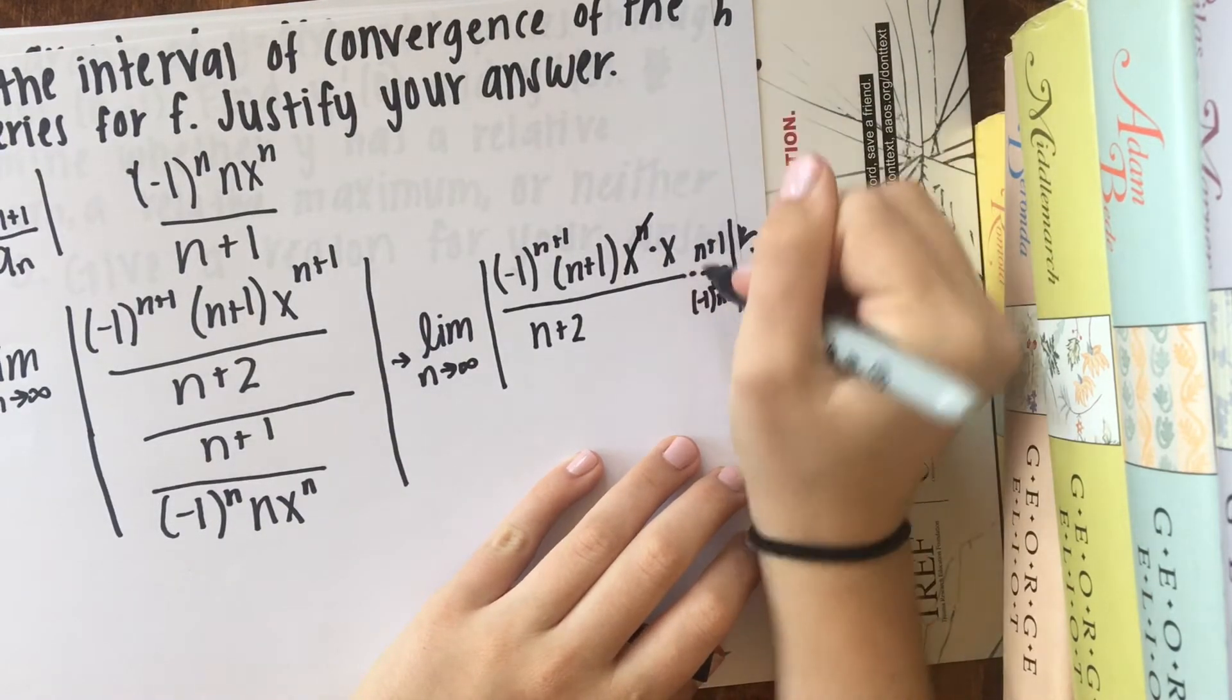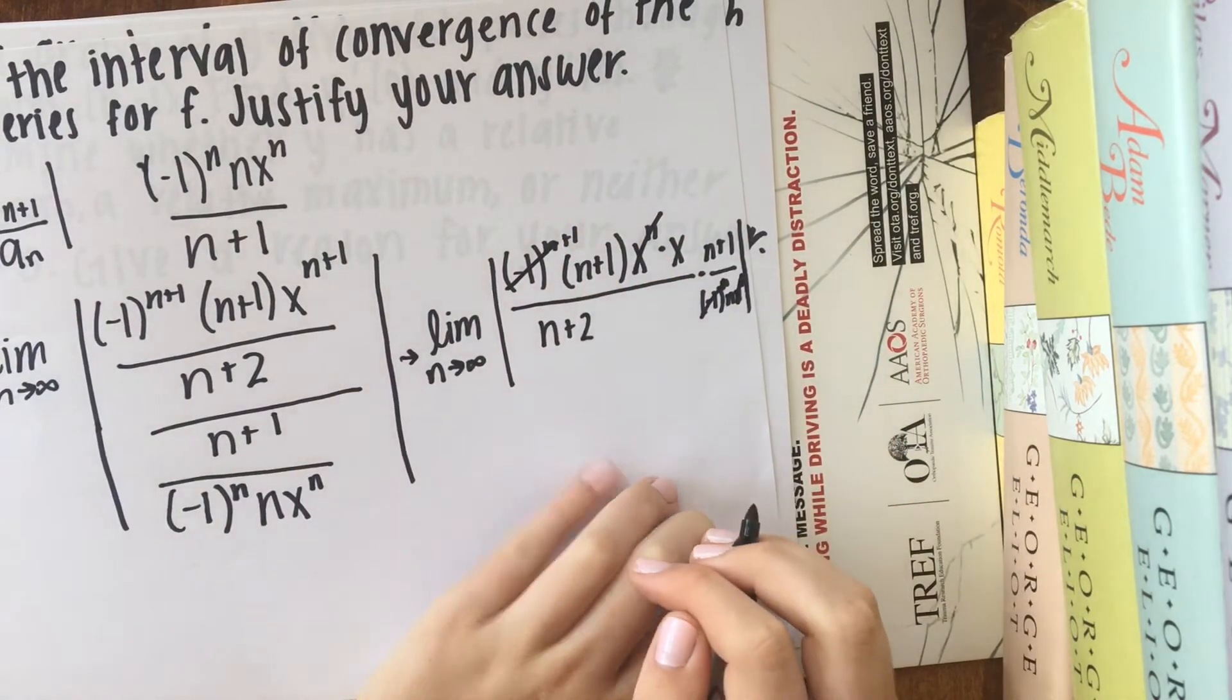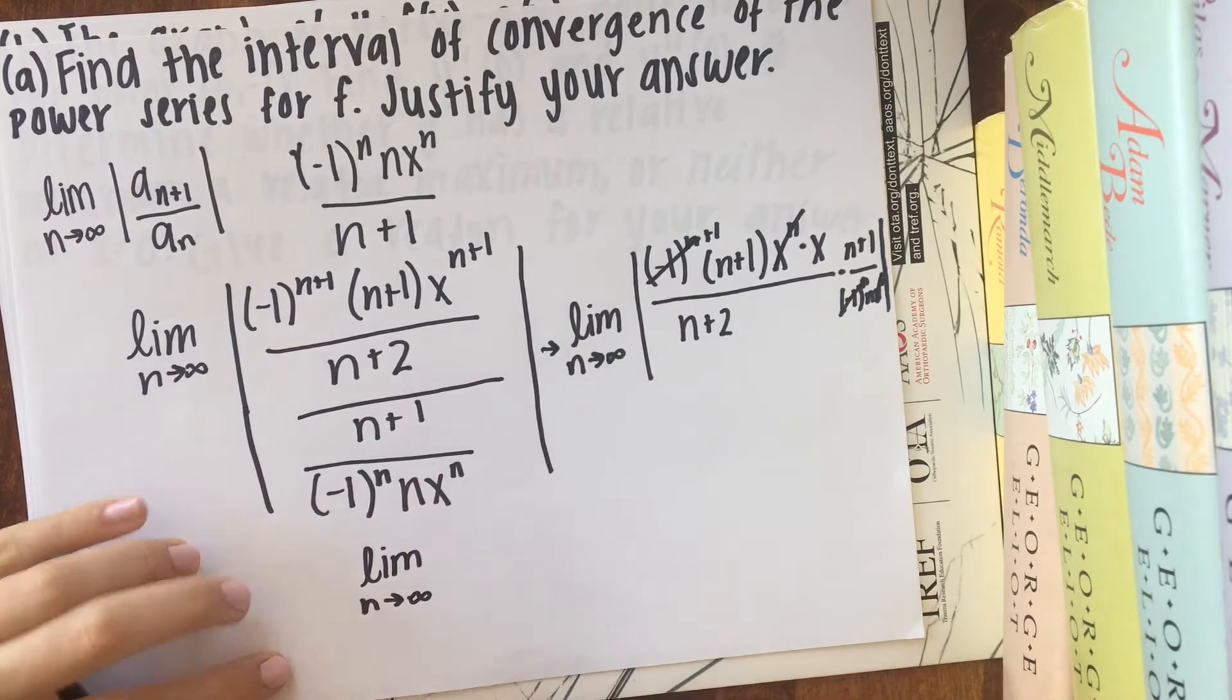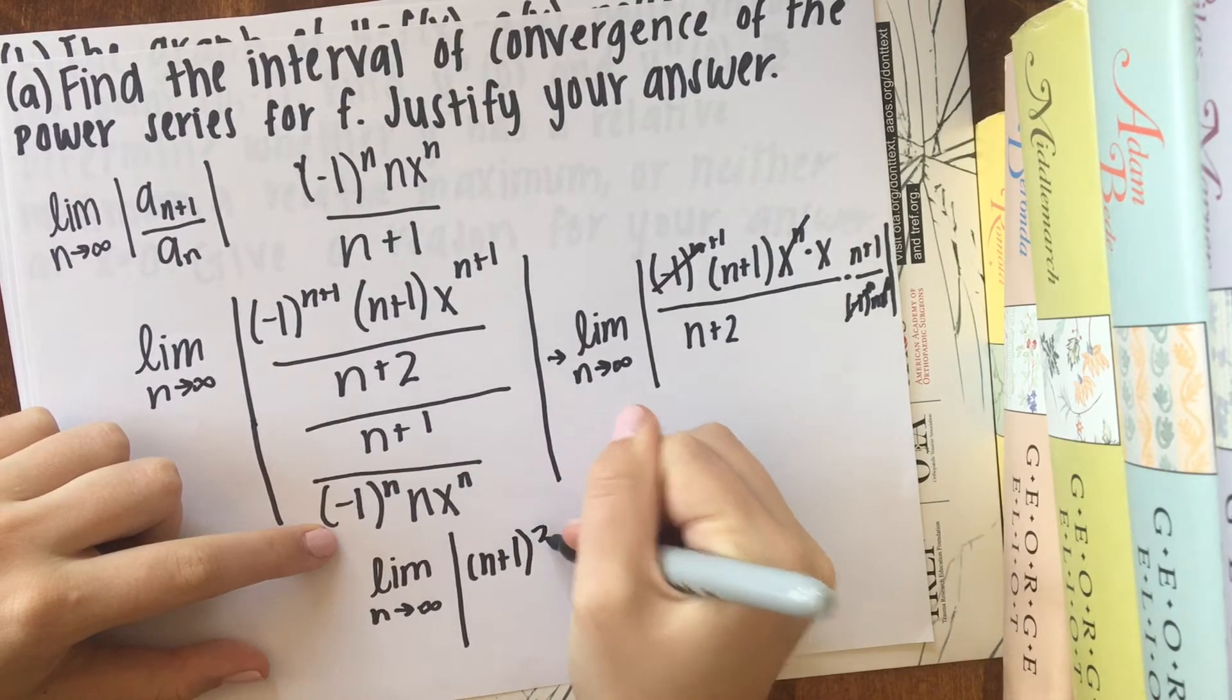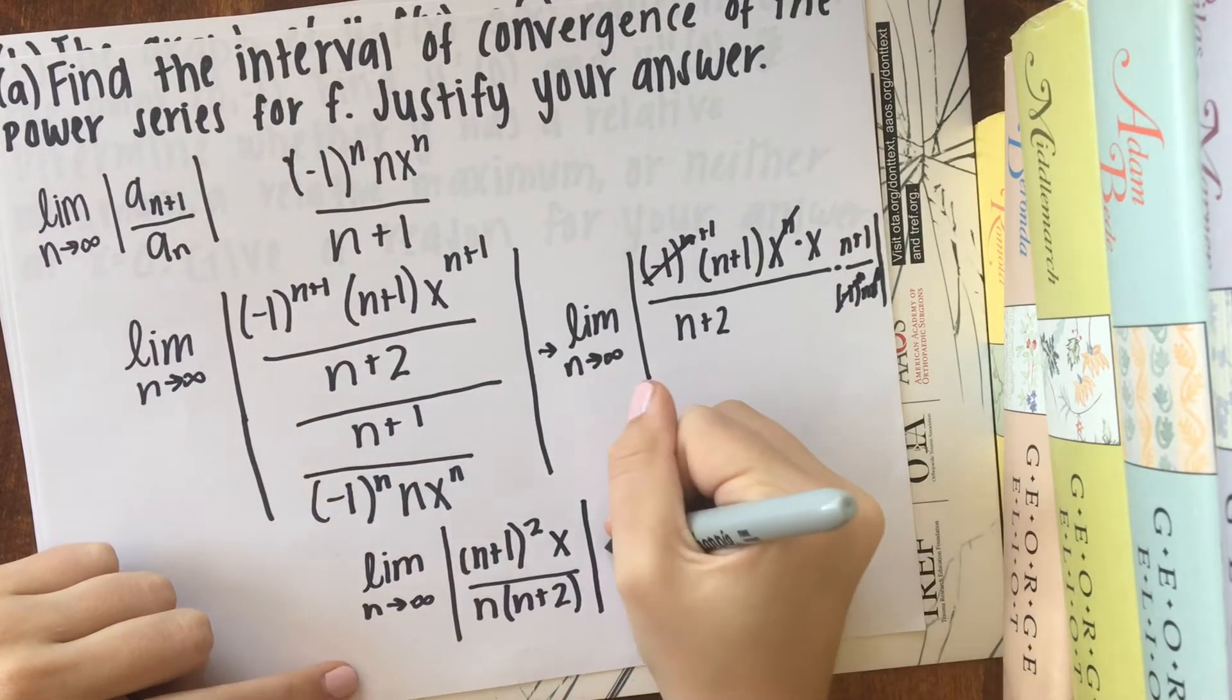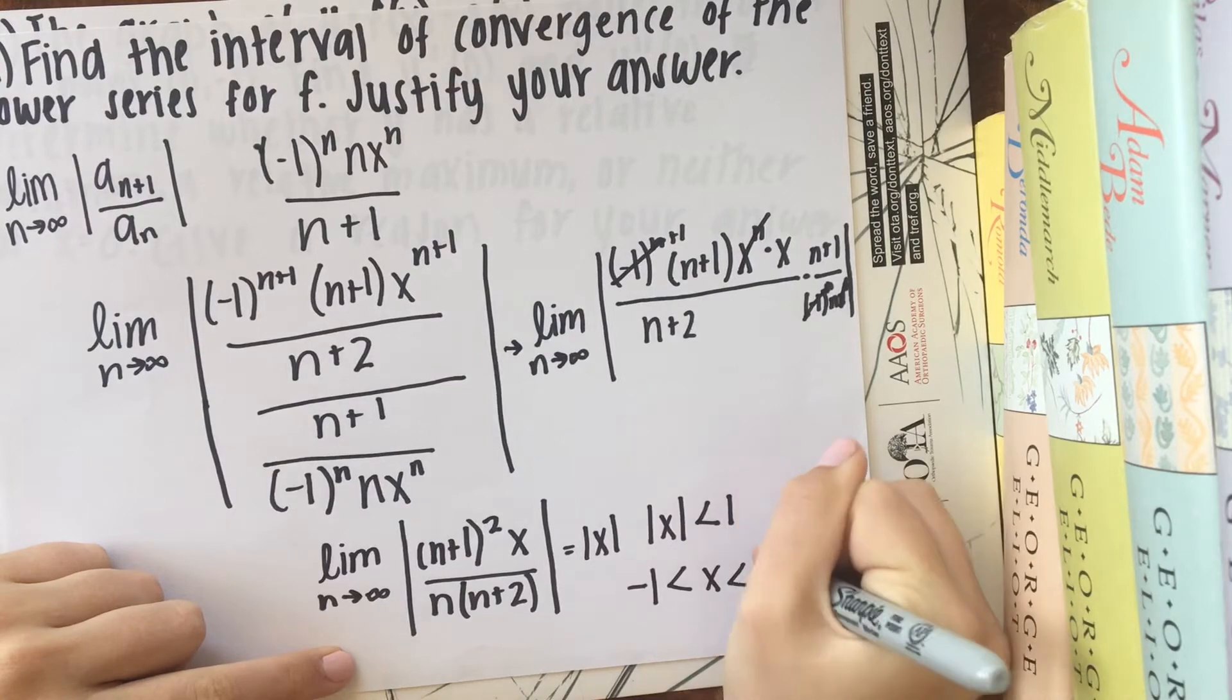And here we have some cancellations. So these two x to the n's are going to go, and these negative ones are going to go, and this one negative one doesn't matter because it's in that absolute value. So now what we have is the limit as n goes to infinity of n plus 1 squared x over n, n plus 2. And so since the limit as n goes to infinity here is going to equal absolute value x, we know that the absolute value of x has to be less than 1. So x must be somewhere between negative 1 and 1.